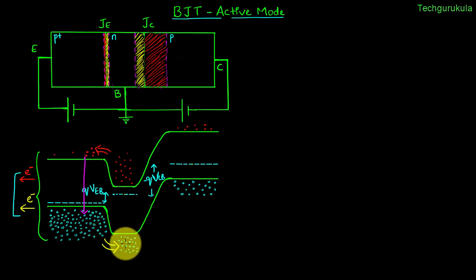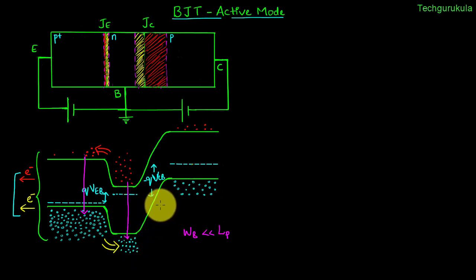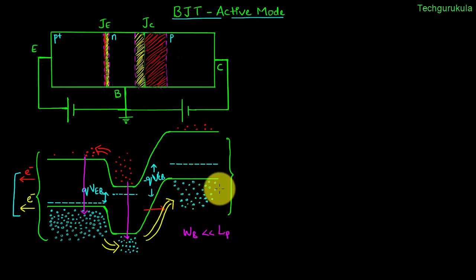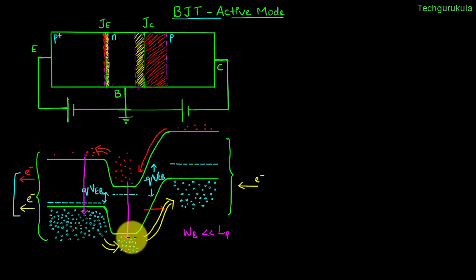The holes injected from emitter to base, as they diffuse through the base, get recombined with the electrons present in the base. Under the assumption that the base width is very small compared to the diffusion length of holes, the recombination would be small. As a result, many holes remain which get pulled by the electric field directed from base to collector. These remaining holes after recombination get pulled by this electric field into the collector. Any holes arriving at the collector per unit time are taken away by the supply connected between collector and base. Since the collector junction is reverse biased, minority carrier electrons in the collector get pulled onto the base side, and minority carrier holes in the base get pulled onto the collector.